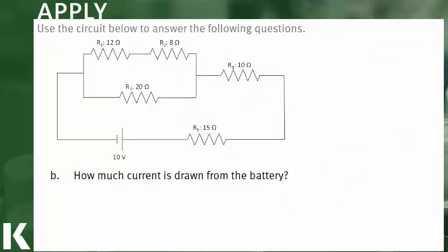Part B asks us to determine how much current is drawn from the battery. So we're going to use Ohm's Law. V is equal to IR. And we'll rearrange this to solve for the current. So current would be the voltage of the battery divided by our total resistance.